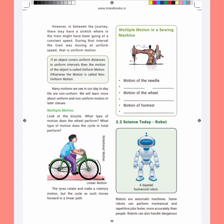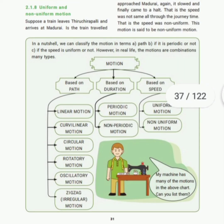Another example is a sewing machine. The motion of the needle is linear, the motion of the wheel is rotatory, and the motion of the footrest is oscillatory — this is multiple motion. To summarize, motion can be classified based on the path (linear, curvilinear, circular, rotatory, oscillatory, zigzag), based on the time interval (periodic, non-periodic), and based on the speed (uniform, non-uniform).